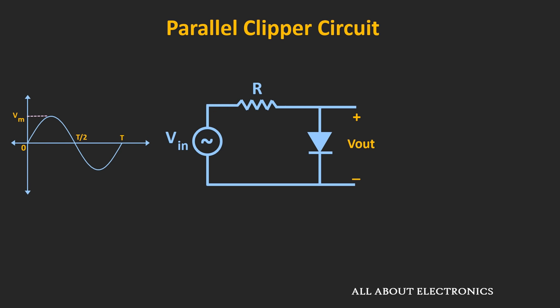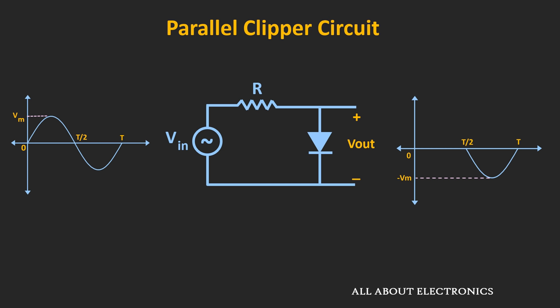This is an example of the Parallel Clipper Circuit. Let's analyze this circuit and see how the output waveform will look. Throughout the analysis, we will assume that the diode used is an ideal diode. During the positive half cycle, this diode will get turned on and will simply act as a short circuit. So during the positive half cycle, the output of the circuit will be equal to zero. During the negative half cycle, this diode will act as reverse bias and simply as an open circuit. So during the negative half cycle, the output will follow the input voltage. The overall output eliminates the positive half cycle and allows the negative half cycle — so basically, it is the positive clipper circuit.